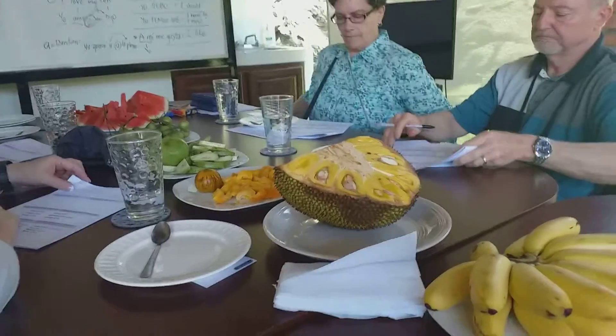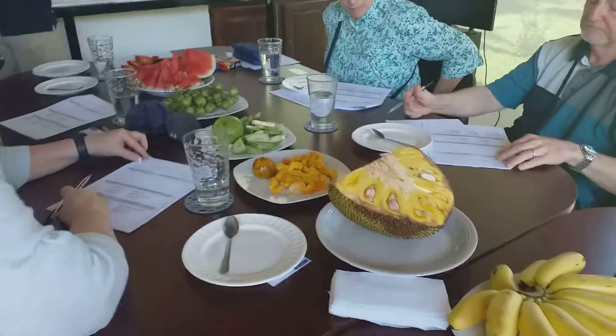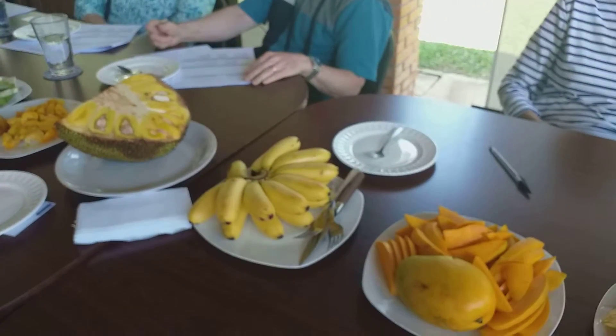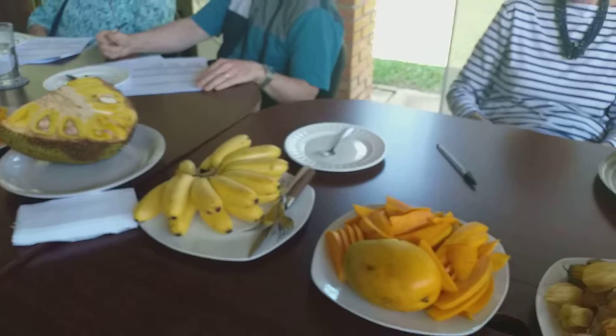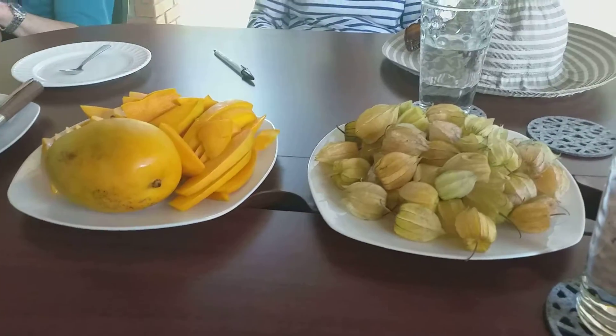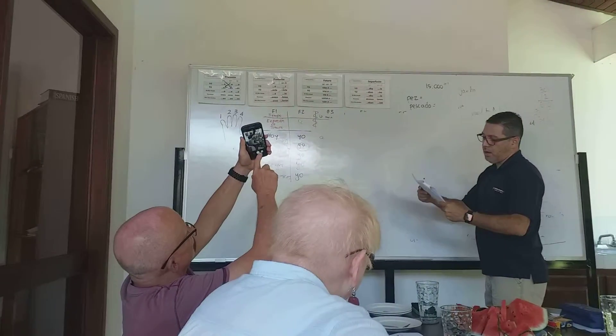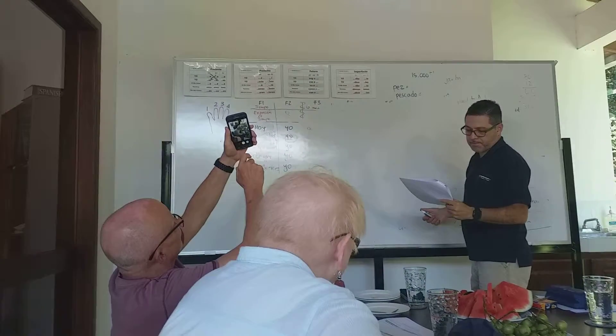We will learn the names of the fruits, and we will practice the color of the fruits and the flavor. And of course, here we will practice one of the six main verbs, that is 'me gusta' — I like.